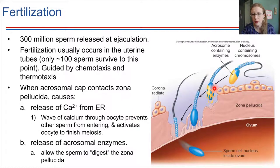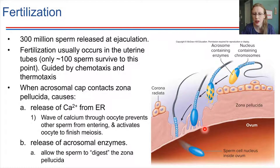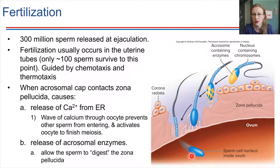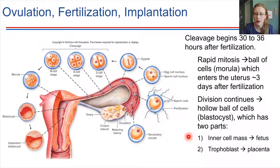The other thing that happens when contact is made is that acrosomal enzymes get released from the head of the sperm. These enzymes digest away the zona pellucida so that the sperm nucleus can get inside the egg cell — just the nucleus goes inside, and the tail gets left on the outside. Once that nucleus is inside, the two nuclei join together and form a zygote. A zygote is a fertilized egg.